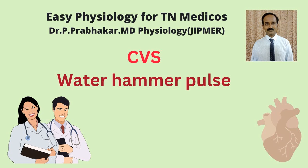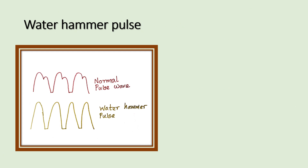Good morning. In this video we are going to discuss about the water hammer pulse. Water hammer pulses are abnormal pulses. This is the normal pulse wave pattern — this is the tidal wave, this is the dicrotic wave, this is the dicrotic notch. This is the normal pulse wave pattern: a tidal wave, dicrotic notch, and dicrotic wave.